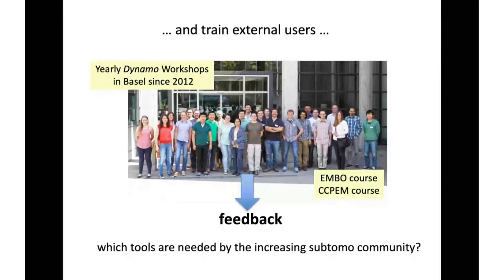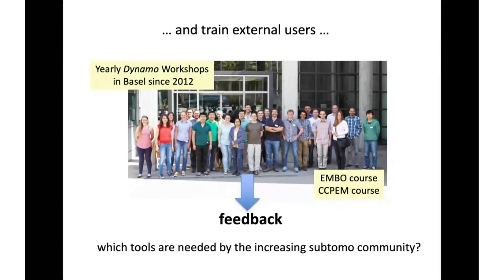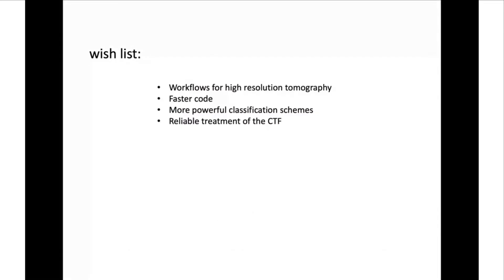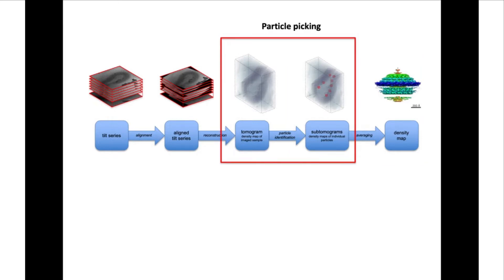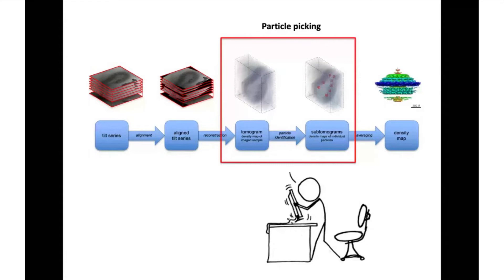We have been doing workshops and other outreach activities in the community, and in these activities we always ask for feedback: what would you like to have in Dynamo? We expected users to ask for higher resolution, faster code, better classification, CTF handling. But the absolute hit in our feedback forms was particle picking — how do I get my particles out of my tomograms?